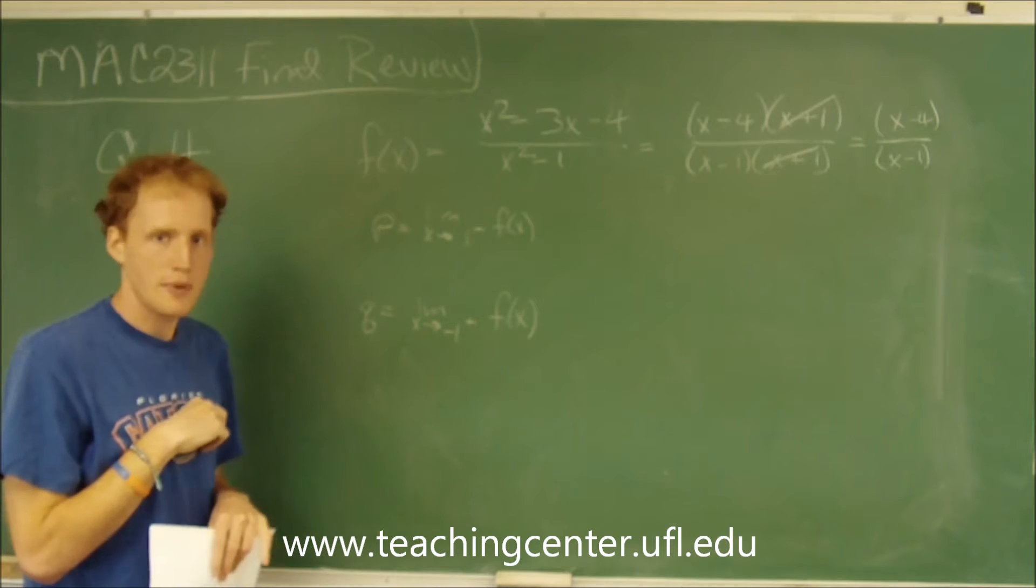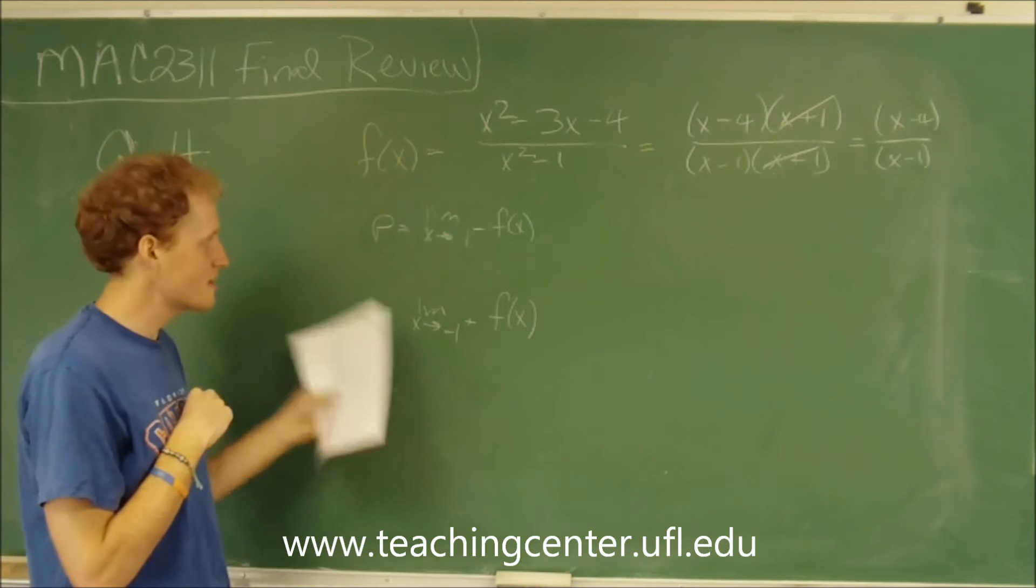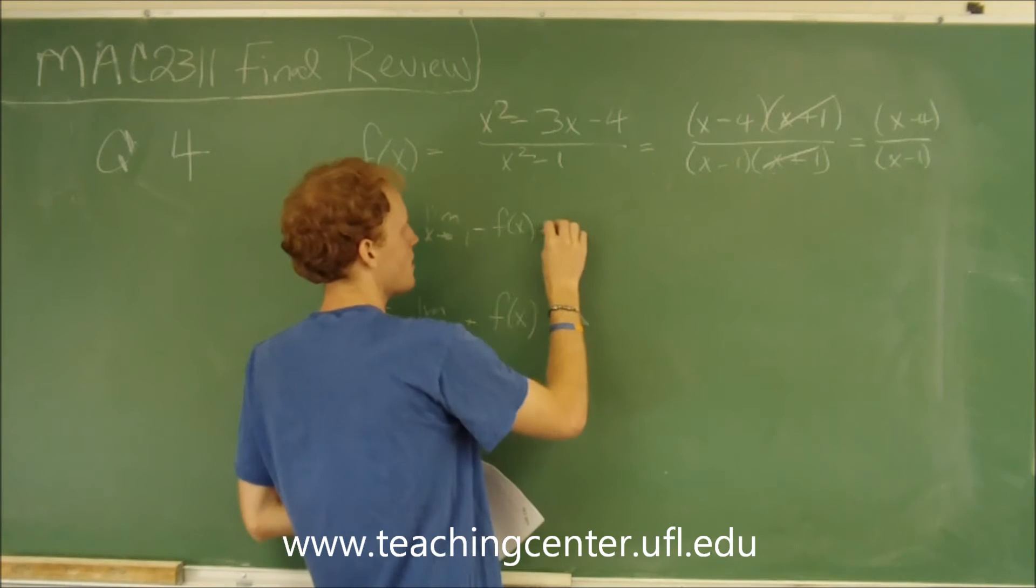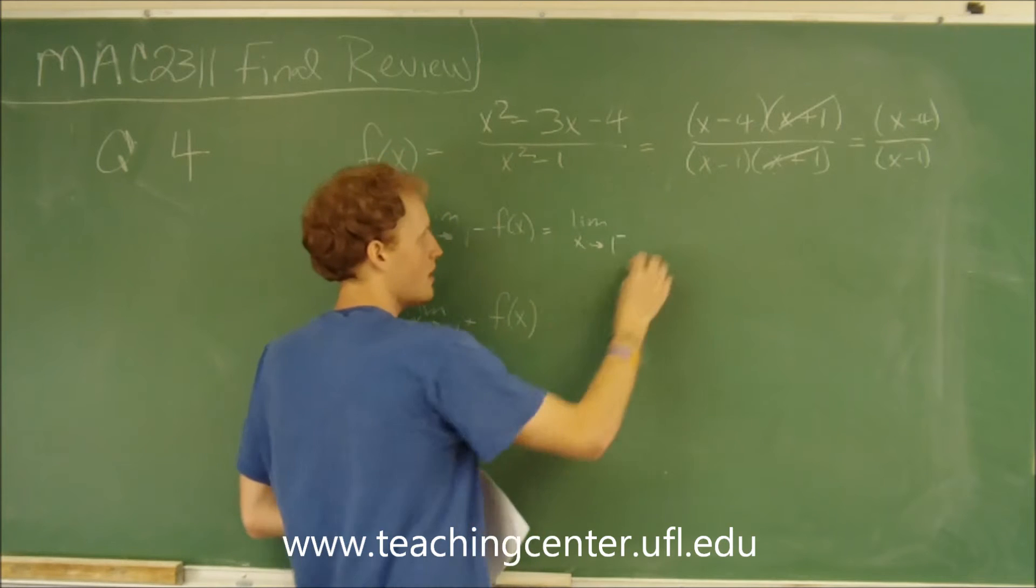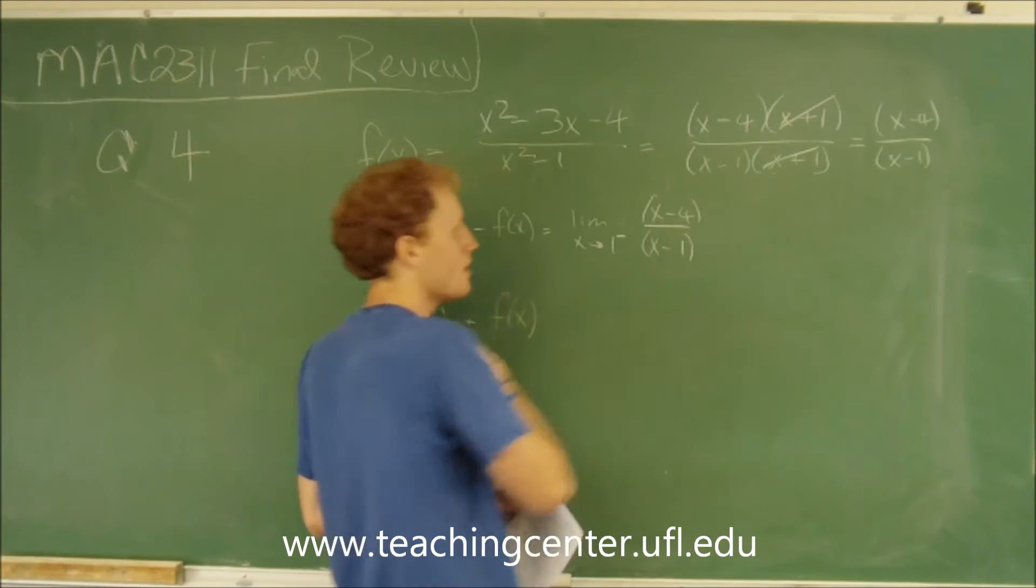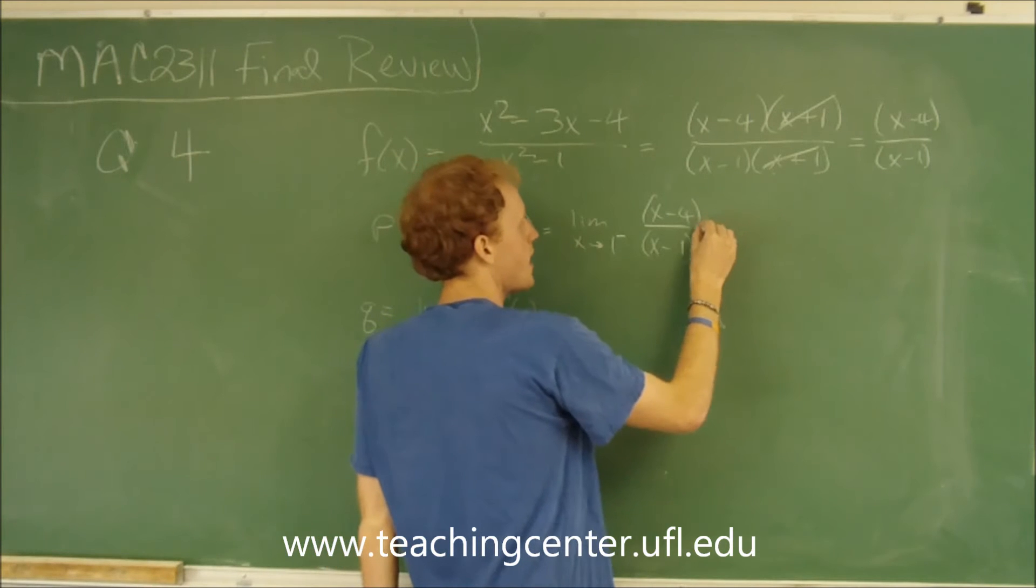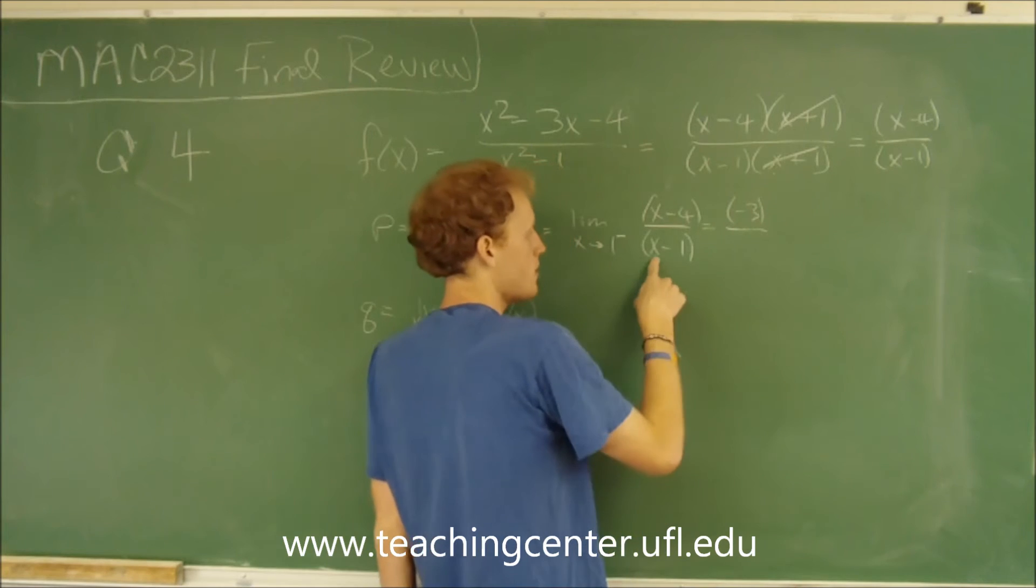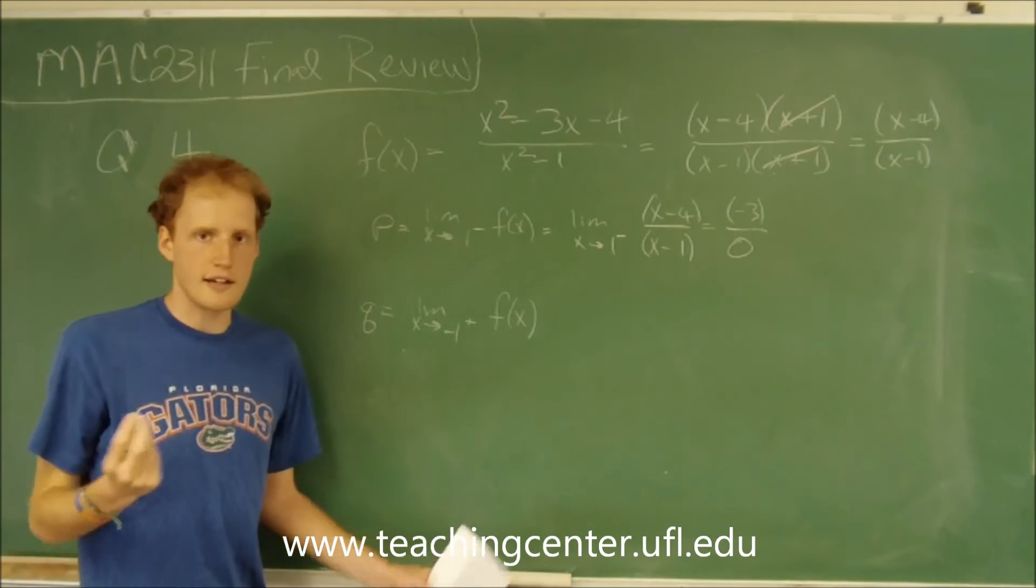Now we should try and evaluate p. It's the limit as x approaches 1 from the left hand side of f(x). If we plug in 1, we're going to get 1 minus 4, which is negative 3, over 1 minus 1, which is 0. So this tells us that it's undefined.